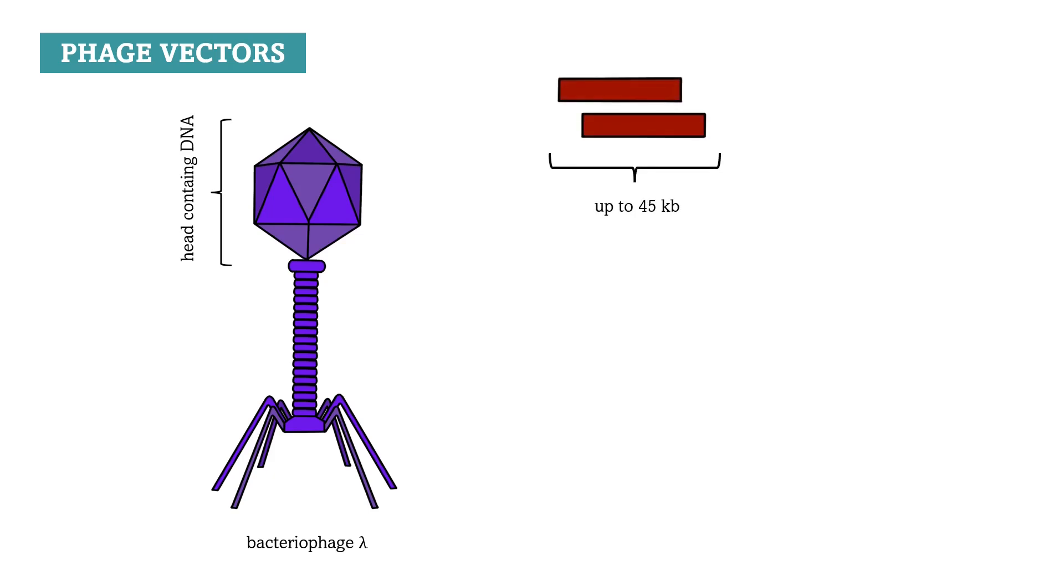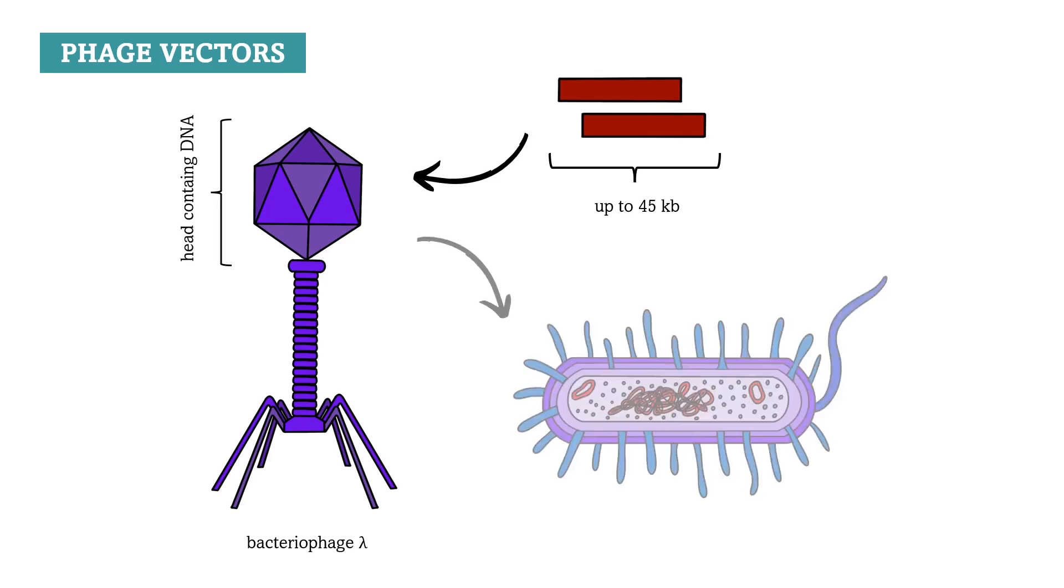The way it is used is kind of similar to a bacterial plasmid, so we insert the DNA fragment into the phage vector. The phage can then infect bacterial host cells, it can replicate and copy the DNA fragment inserted.